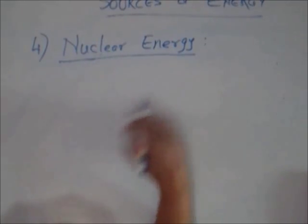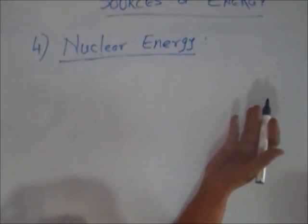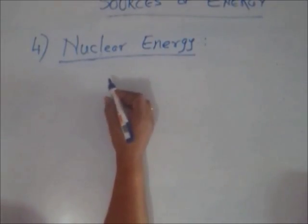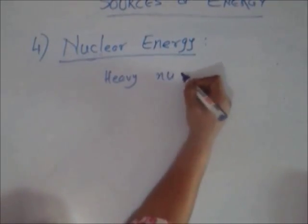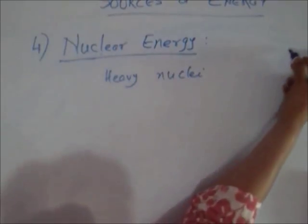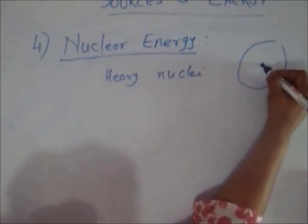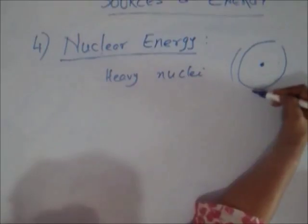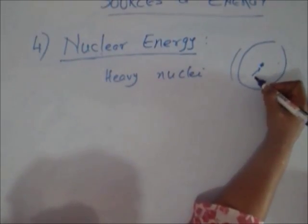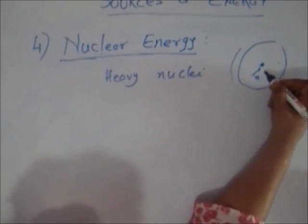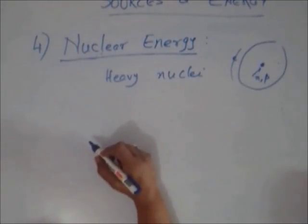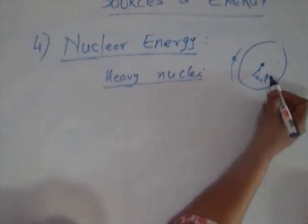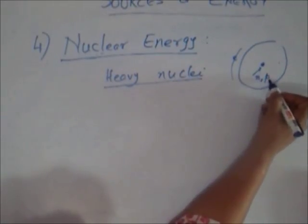Einstein figured out in 1905 that if you have heavy nuclei - remember, nuclei are the part of atoms - so these are the revolving electrons and these are the nuclei. Nuclei have neutrons and protons, while electrons are in the orbit.